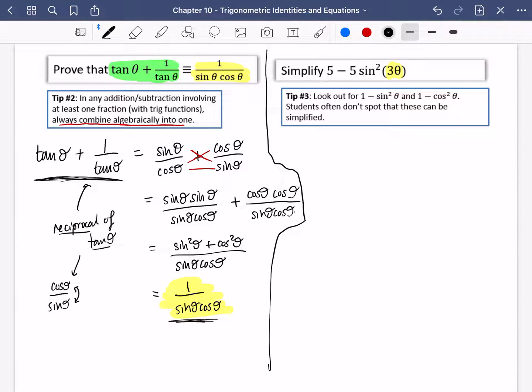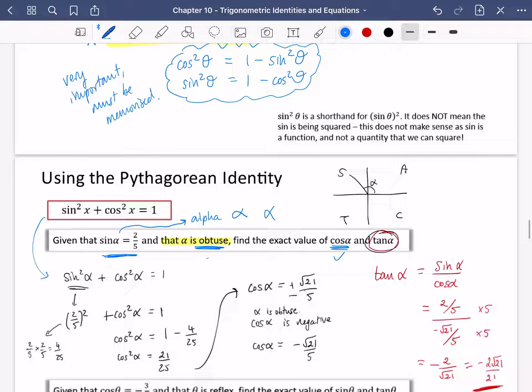Now this I'm going to start off with by simplifying it. You should look at this and think to yourself, oh you know what I could do here? I could factorize this. So I'm going to say it's 5 times 1 minus sine squared 3θ. And now we can use tip number 3. Tip number 3, look out for 1 minus sine squared θ and 1 minus cos squared θ. Because you know that 1 minus sine squared θ is cos squared θ and 1 minus cos squared θ is sine squared θ.